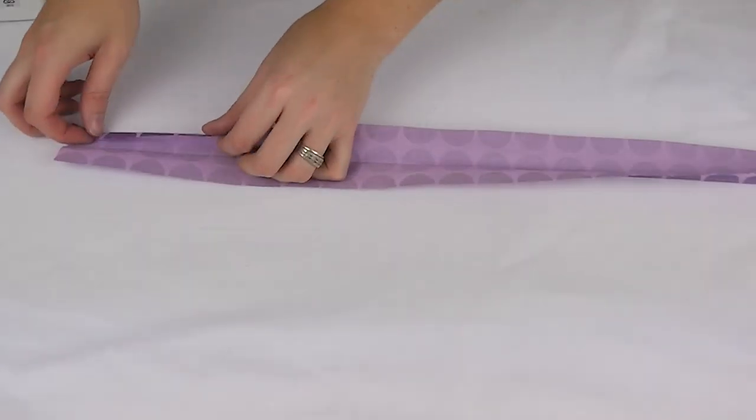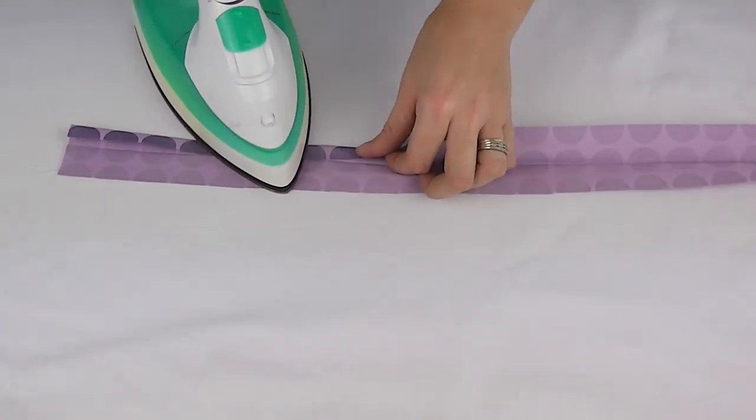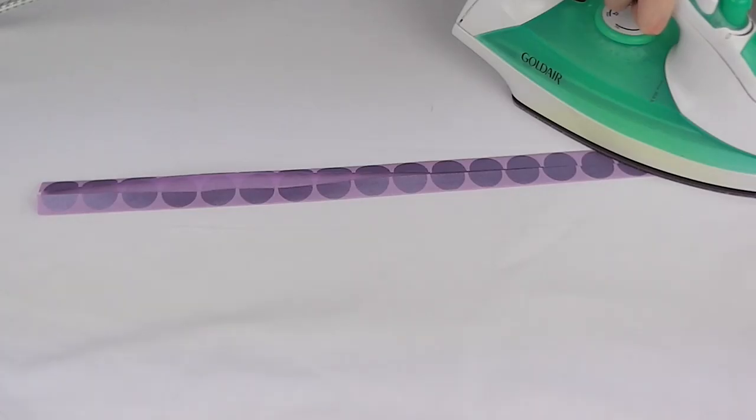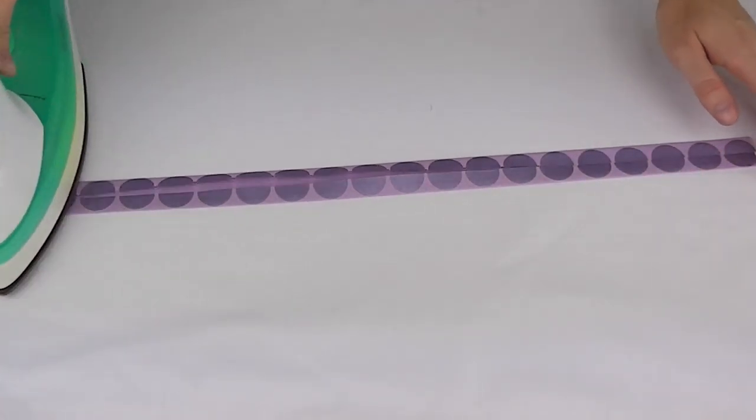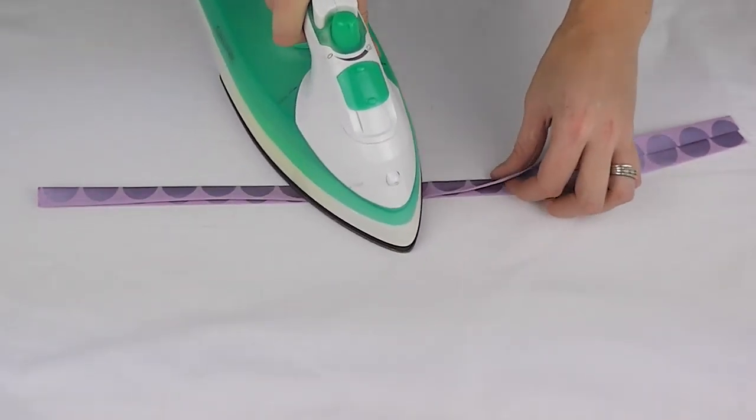Fold in a tiny amount of fabric on each end to create a nice finished look at the end of your ties and fold in each side to meet in the middle and press. Fold this piece in half again and press well.